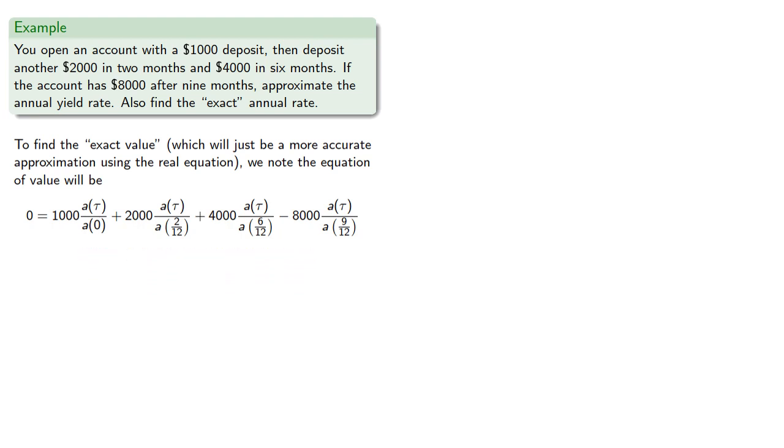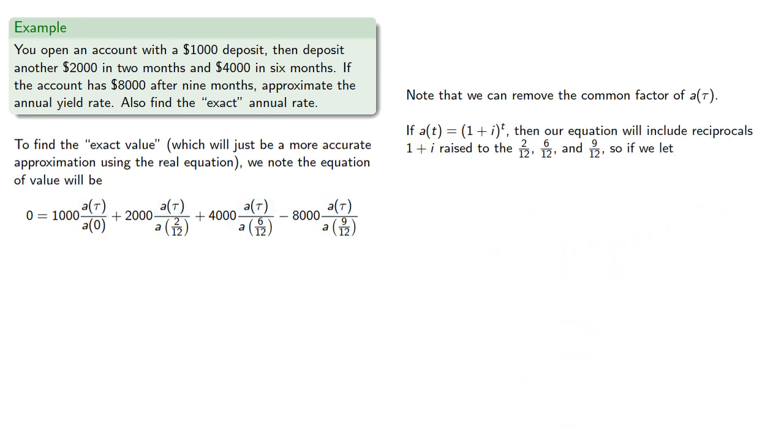Note that we can remove a common factor of a of tau. If a of t is 1 plus i to the t, then our equation will include reciprocals 1 plus i raised to the 1/12th, 6/12ths, and 9/12ths. So if we let x equal 1 divided by 1 plus i to the 1/12th, we can simplify our equation.